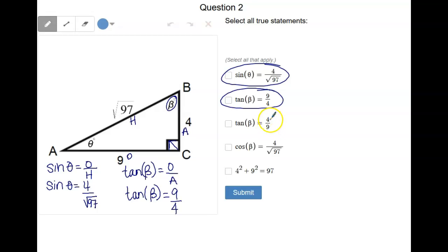The next one is very similar but you notice that we have the reciprocal of this one here. So tangent of beta cannot be two different things at once. So automatically we can eliminate this one.